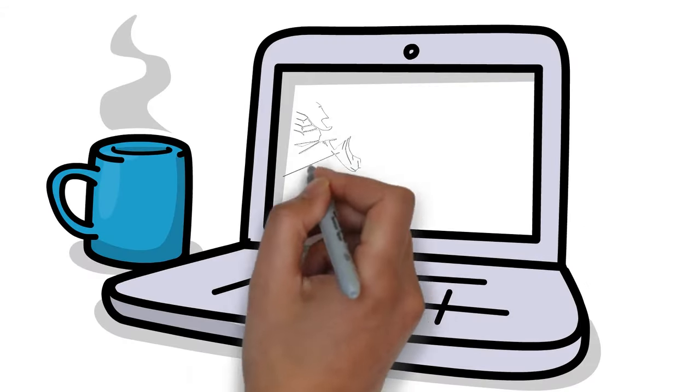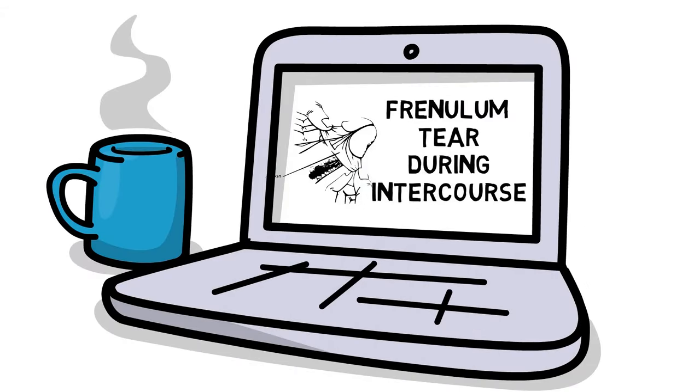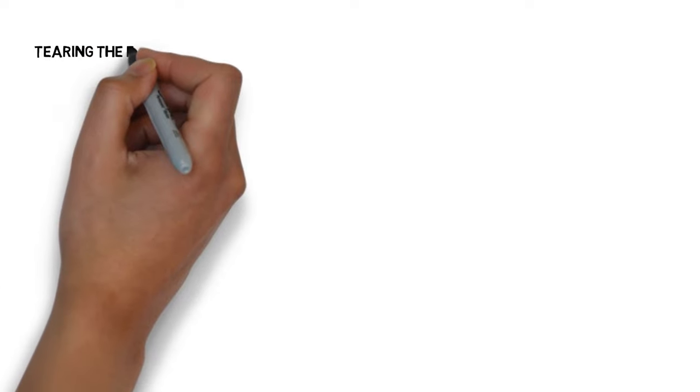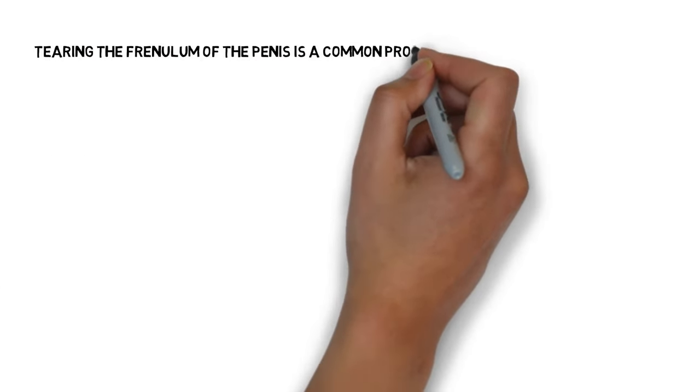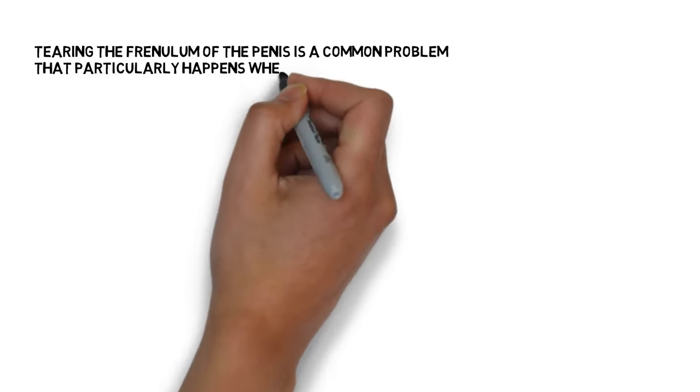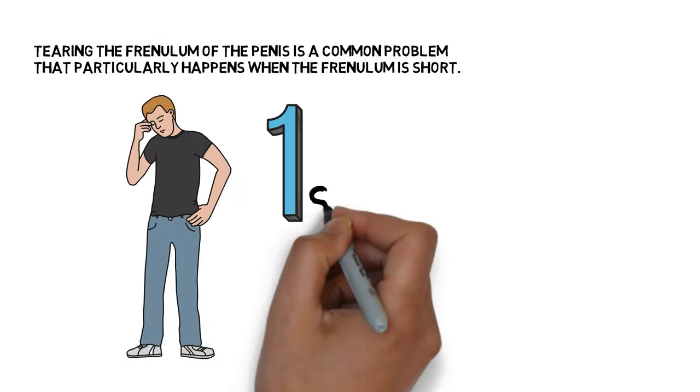In today's video we are going to talk about frenulum tear during sexual intercourse. Tearing the frenulum of the penis is a common problem that particularly happens when the frenulum is short. It often tears after the first time you have sex, causing bleeding and intense pain near the glans penis.